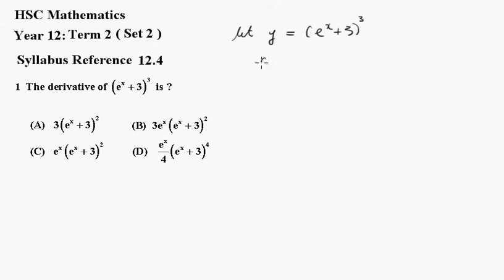Now using the composite function rule, the 3 comes down the front. e to the x plus 3, take off 1 to get 2. Look inside, differentiate that and just get e to the x.